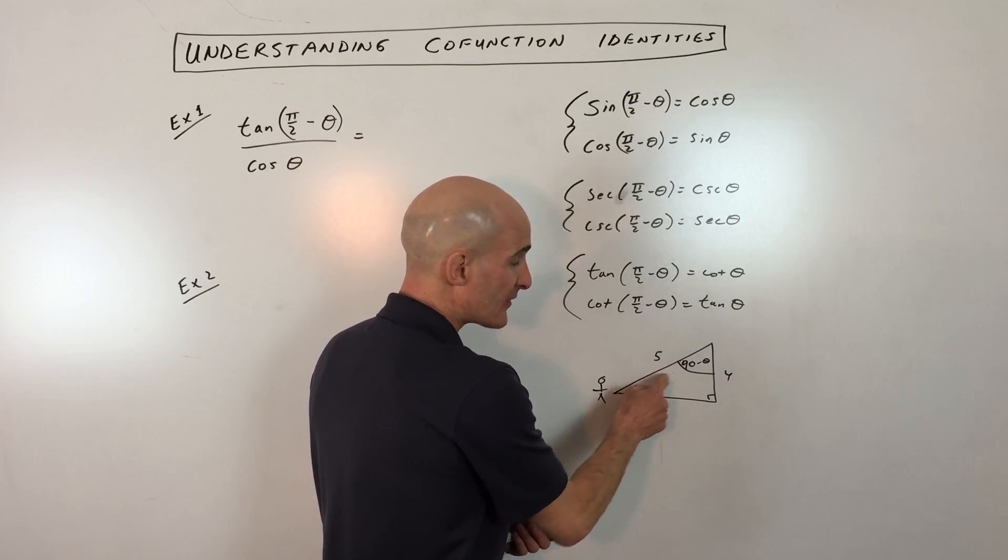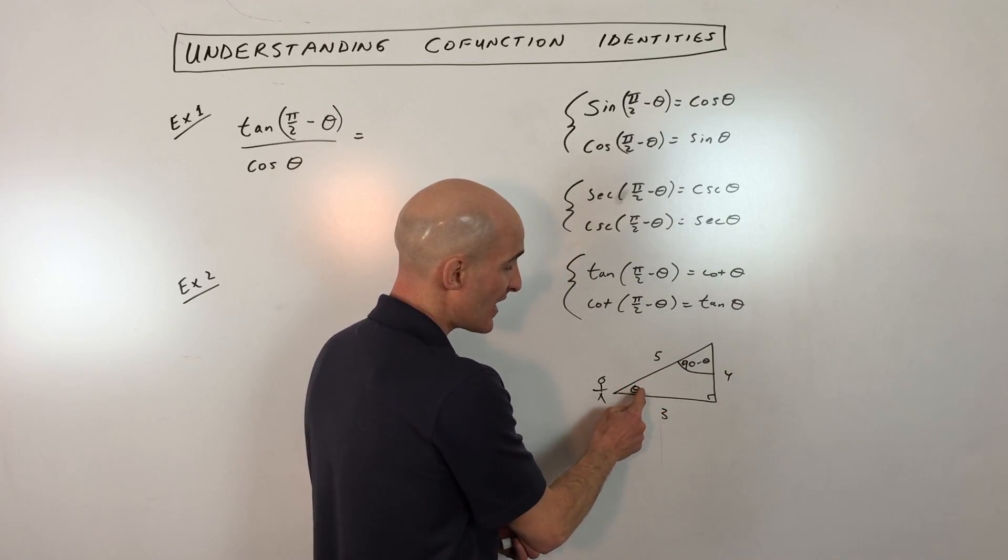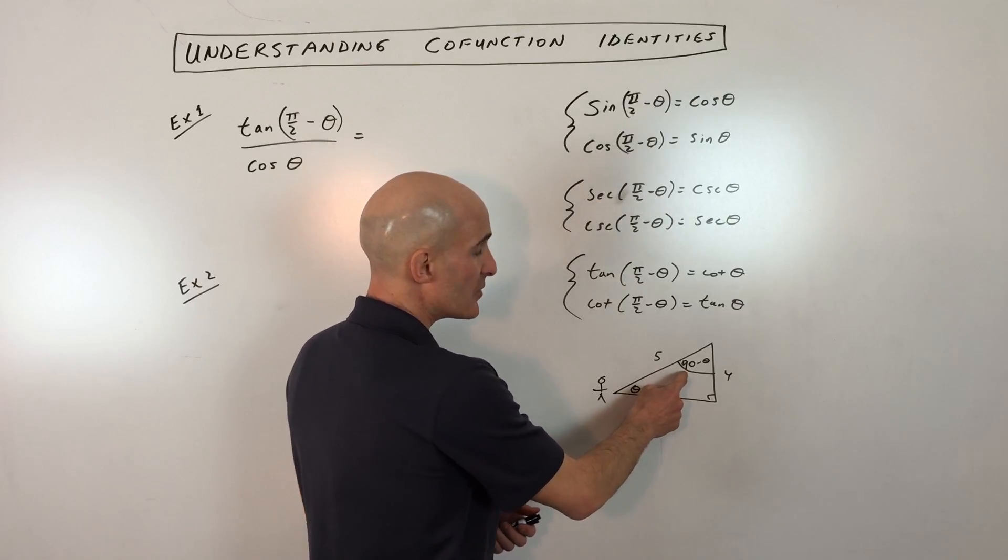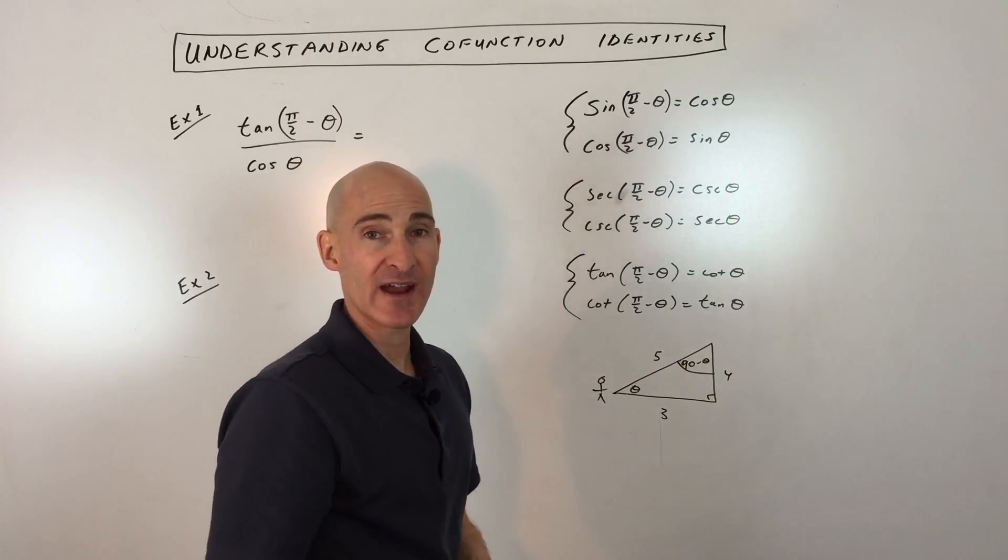If this one's 90, these two have to add up to 90. So say for example, if this was 10, this would have to be 80 degrees, because these add up to a total of 90 degrees.